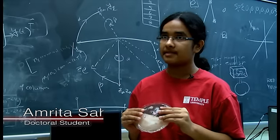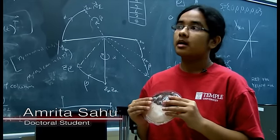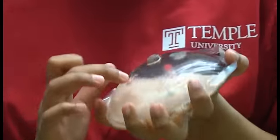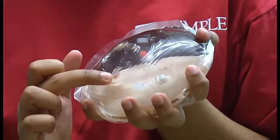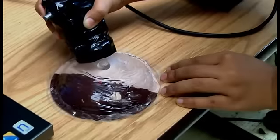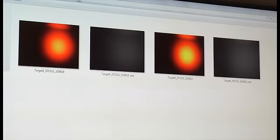This is the Mammacare Phantom. Doctors and nurses use this to learn how to perform clinical breast examination. As you can see in the Phantom, there are inclusions in here. So what we do is that we take the tactile imaging system and we image these inclusions and we save that image onto the computer. After we are done with our imaging process, we now come over to the scoring system.